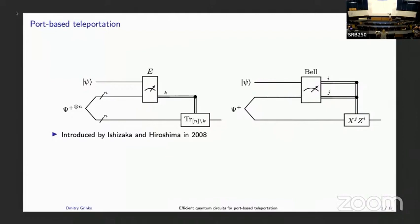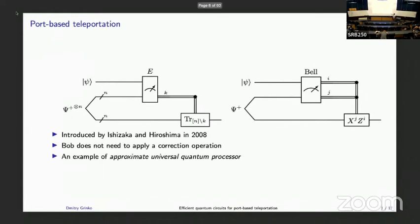Instead, what Bob needs to do is just select the port, as Adam explained in the previous talk. The cost of doing this is that you now need to share n ports, or n EPR pairs in this case, and you will not achieve perfect teleportation for finite n. Originally, in the paper by Ishizaka and Hiroshima, this was presented as an example of an approximate universal quantum processor — a device which takes a description of a unitary and a quantum state and produces a channel implementing that unitary.